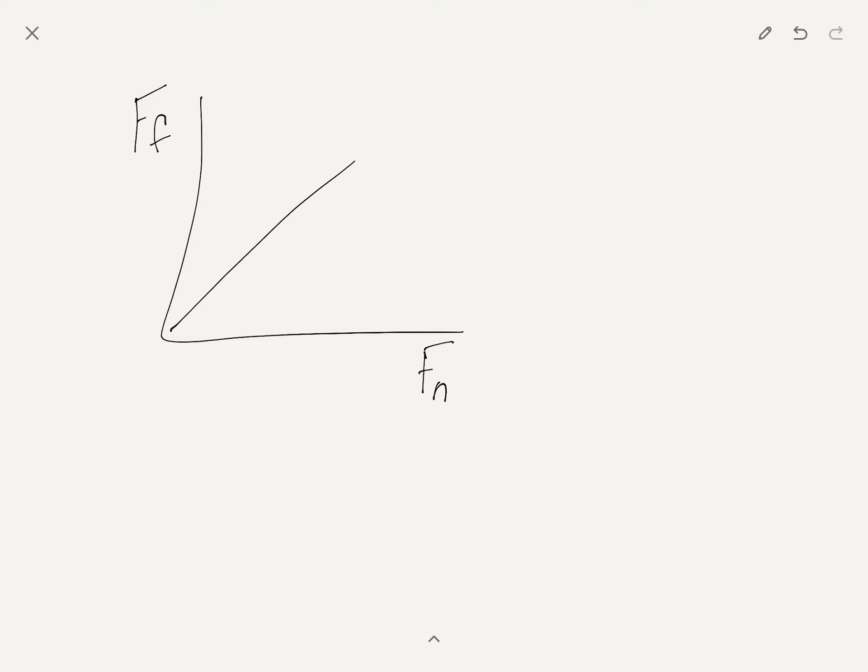So if we analyze this like we did other labs, we're trying to develop an equation. So we're looking at a linear type situation. So it's y equals mx plus b. And there would be no b in this case because if there is no normal force, there's going to be no friction because they need to be in contact.